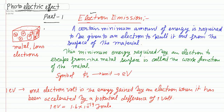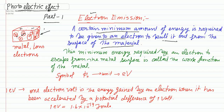Electron emission is defined this way: a certain minimum amount of energy is required to be given to an electron to pull it out from the surface of the metal or material. Here you can see an example of a material in which there are positive ions and electrons inside the metal.